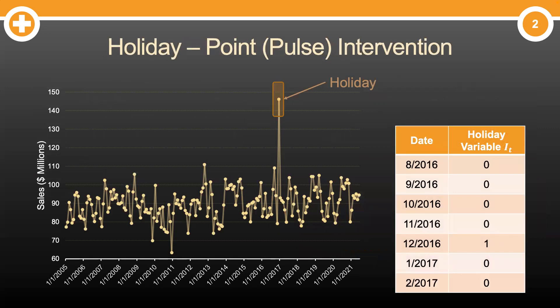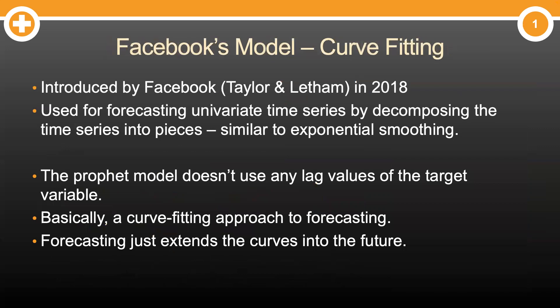Last but not least, we have the holiday component. This holiday component is nothing but a point intervention variable. A point intervention variable is simply a binary indicator for a certain day. For example, if we had a sales promotion in December of 2016, then we can make a binary variable highlighting that month, which would help account for the spike in sales during that promotion.